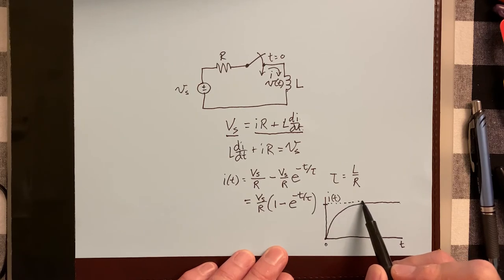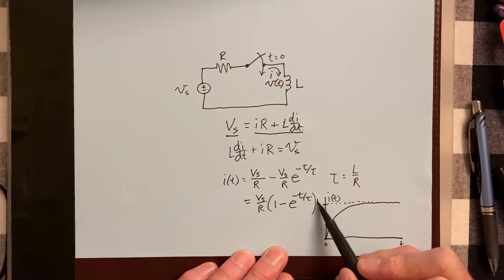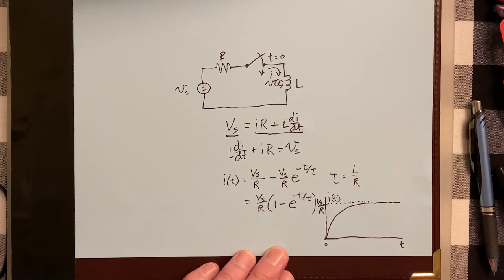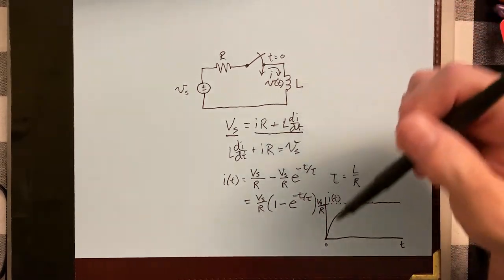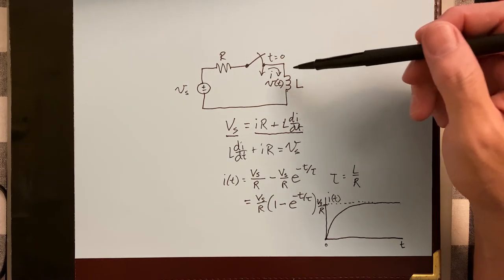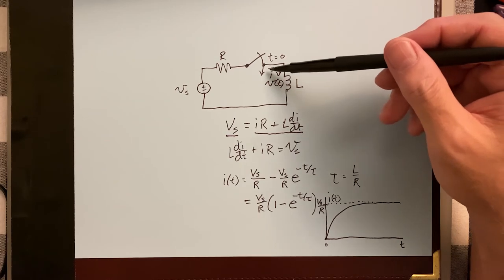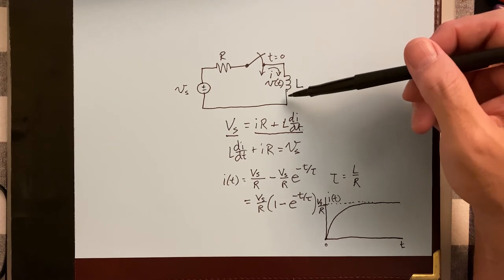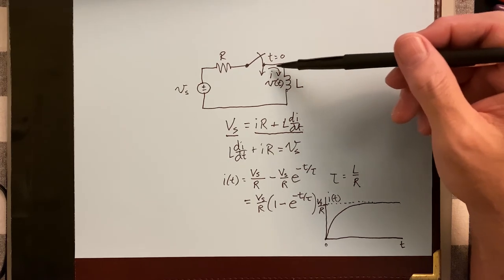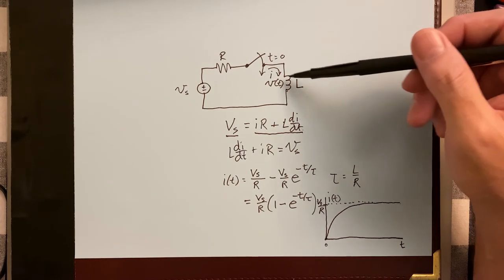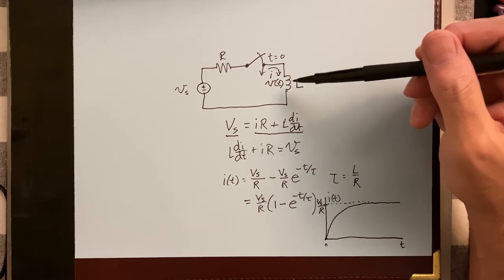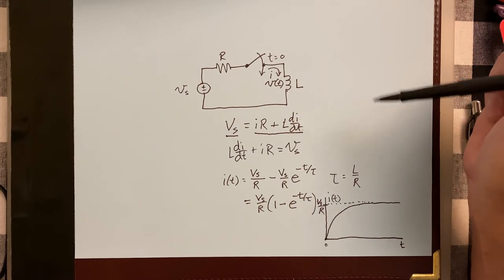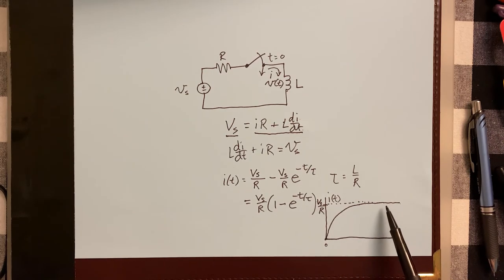Over time the current rises up, approaches a maximum value, and then levels off and reaches that maximum value in the limit. That maximum value, traced back to the vertical axis, is V sub S over R. After a long time — 5 tau — this inductor behaves just as if it wasn't there. There is still energy stored in the magnetic field, but the current just goes straight through. So after 5 tau the current is essentially V sub S over R.